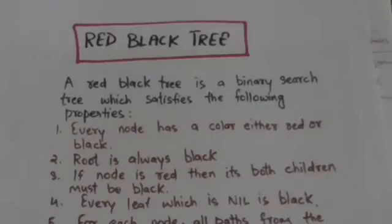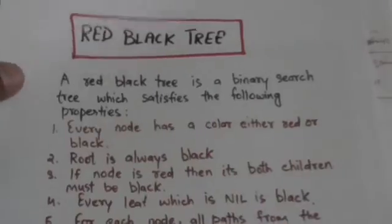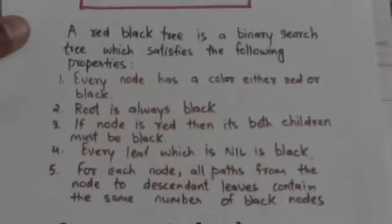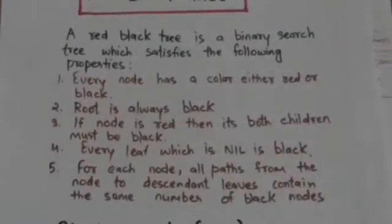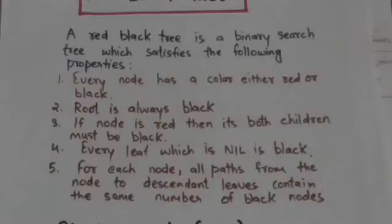Hello friends, welcome back. In this tutorial we will study about red-black trees. A red-black tree is a binary search tree which satisfies these properties. First, every node of a red-black tree has a color, either red or black. Second, the root of a red-black tree is always black.